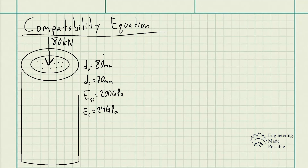The pipe has an outer diameter of 80 millimeters and an inner diameter of 70 millimeters, and the modulus of elasticity for steel and concrete are given. We're dealing with a composite structure composed of two different materials — a steel pipe on the outside with concrete filling the inside.